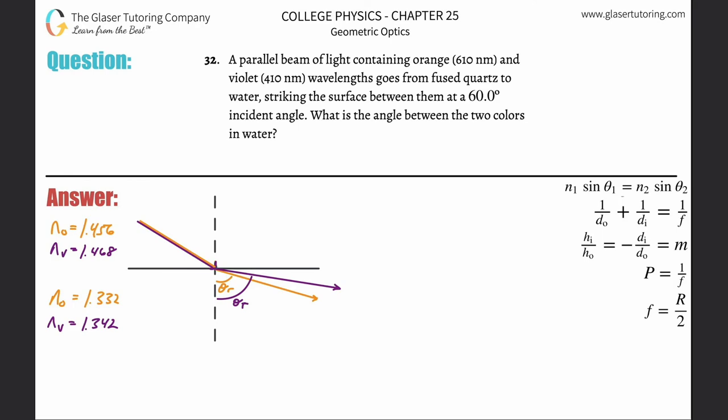Number 32: A parallel beam of light containing orange and violet wavelengths goes from fused quartz to water, striking the surface between them at a 60 degree incident angle. What is the angle between the two colors in water?